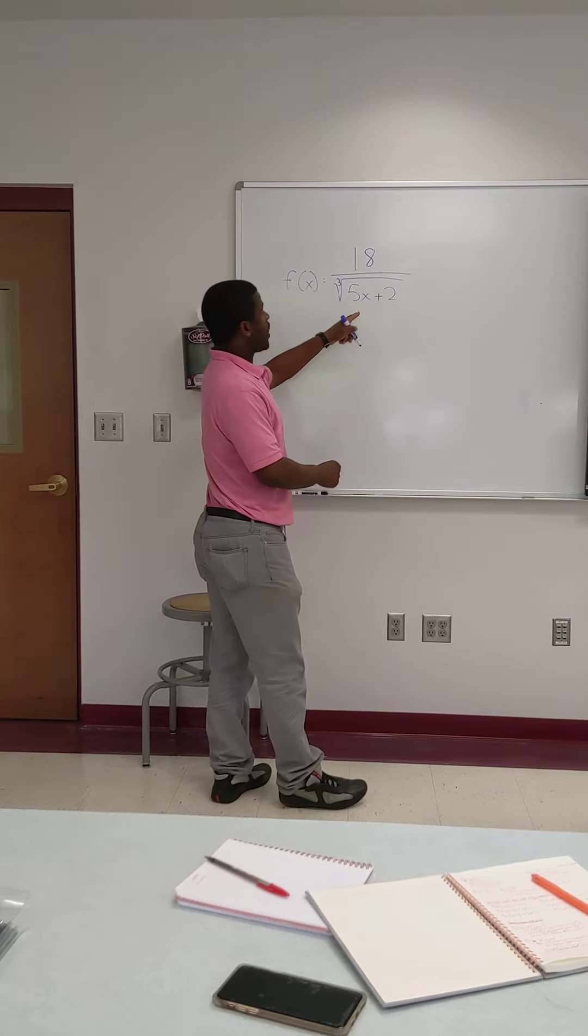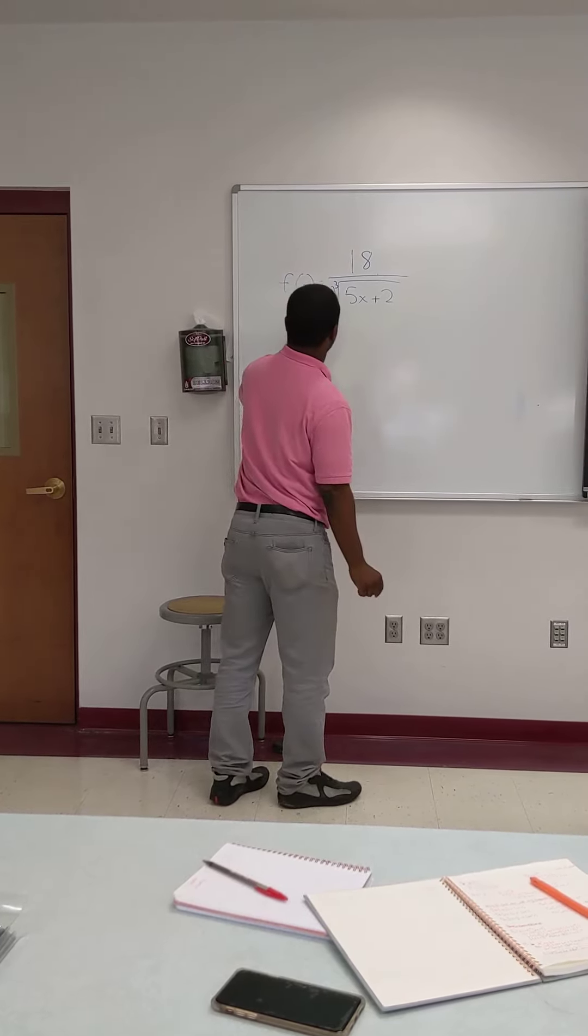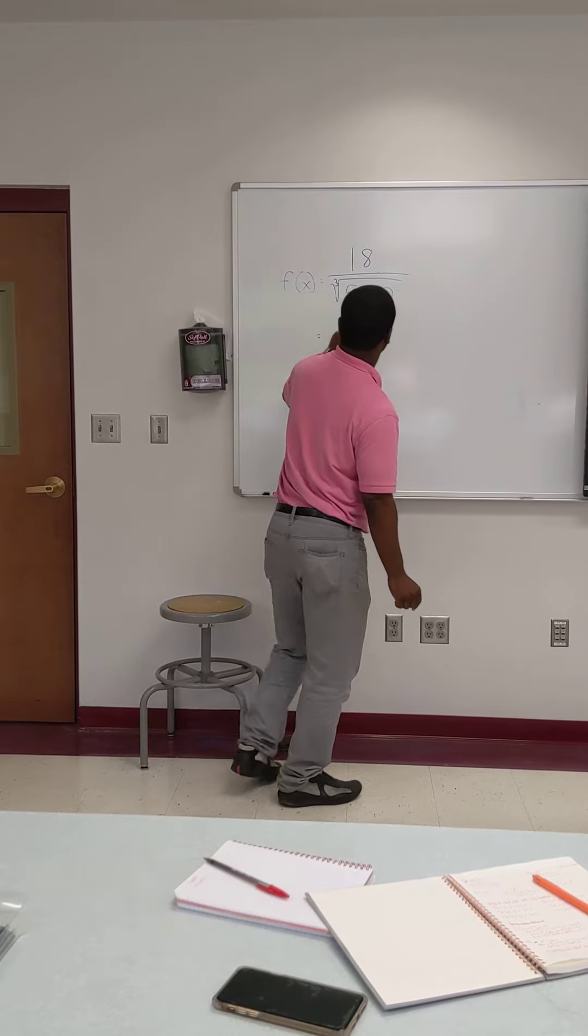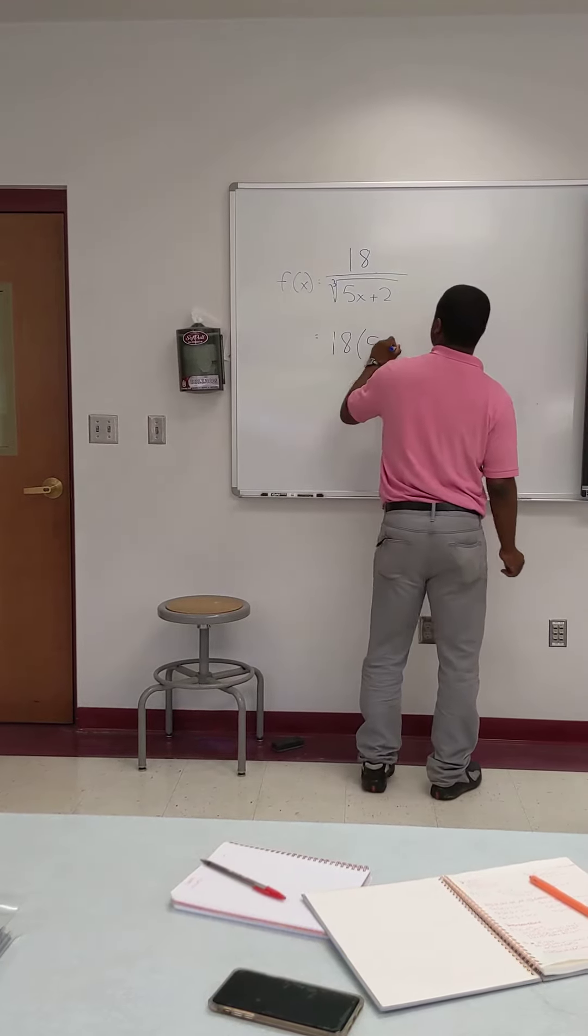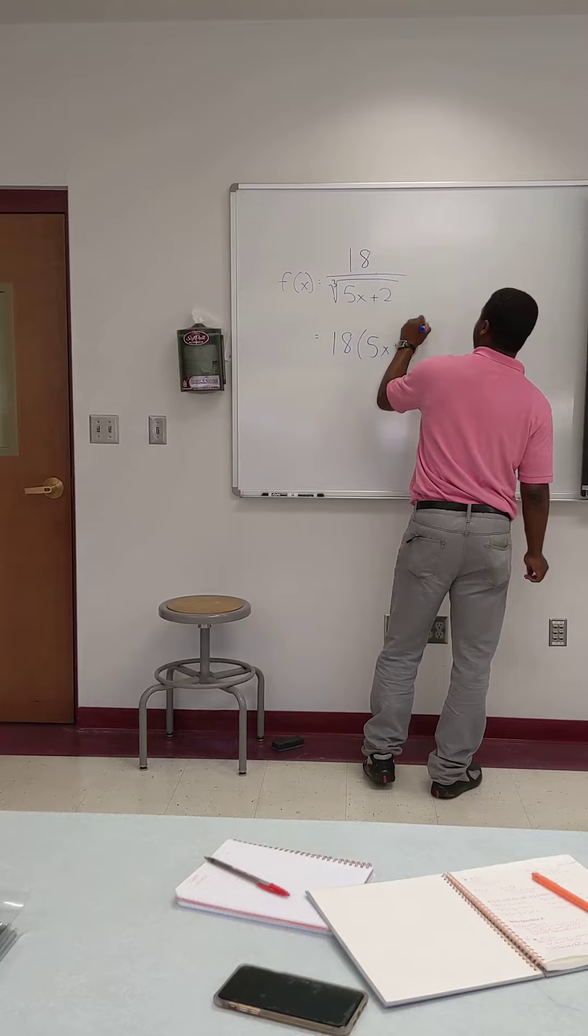So now, the first thing I would do right here is I would rewrite this as 18 times (5x + 2) to the negative 1/3.